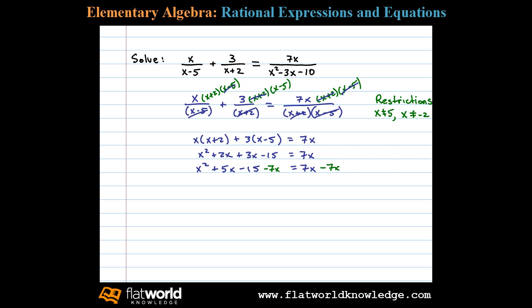Subtracting 7x on both sides, we then obtain standard form: x squared minus 2x, that's 5x minus 7x, minus 15 equals 0. We next factor.